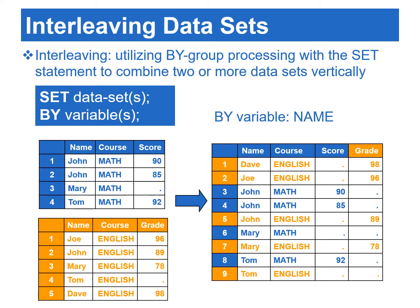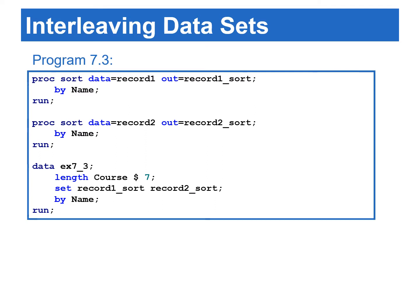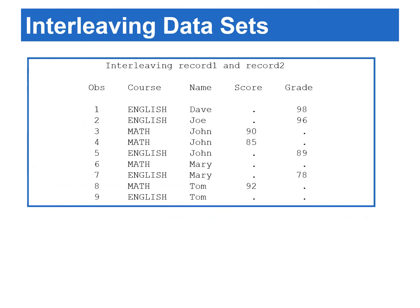Similar to concatenating data sets, if the input data sets have different variables, the observations from the data set are set to missing for variables that only exist in other data sets. Before interleaving data sets, the input data sets must be sorted by the same variables that you use in the by statement. Program 7.3 begins with sorting record one and record two data sets by the name variable, then interleaves the sorted data sets in the data step. Here's the printed result of the combined data.